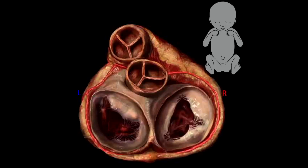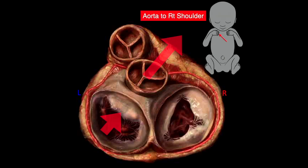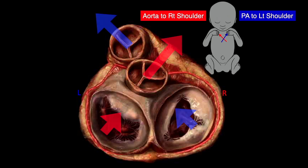If you look at the blood flow coming through the mitral valve, the blood flow comes out of the aorta — as you see right here — with the direction of blood flow towards the fetal right shoulder. And the blood that comes through the tricuspid valve comes out of the pulmonary artery, with the direction of blood flow towards the left shoulder.